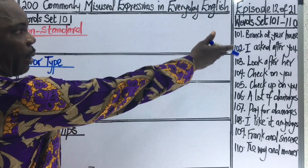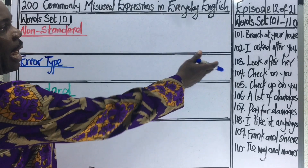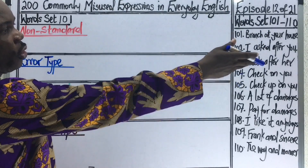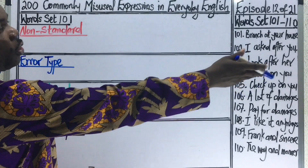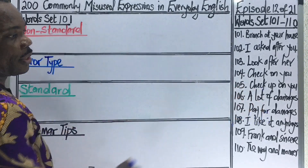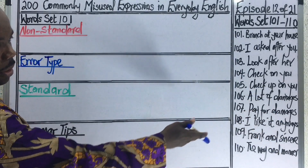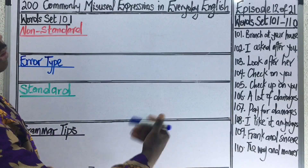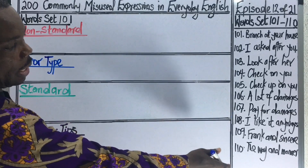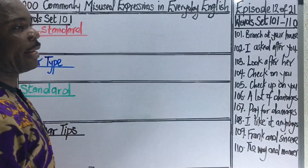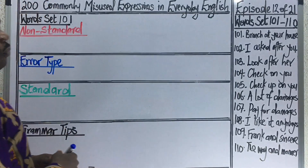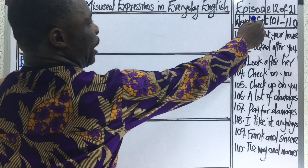The expressions we shall be considering in this episode include: branch at your house, I ask after you, look after her, check on you, check up on you, a lot of damages, pay for damages, I like it anyways, frank and sincere, and the way and manner. Right away we shall take on the first expression, which is branch at your house.